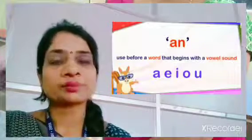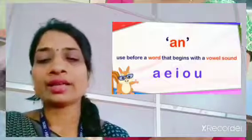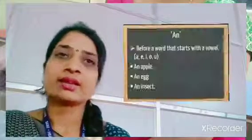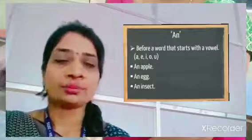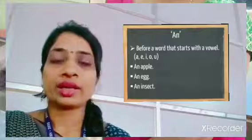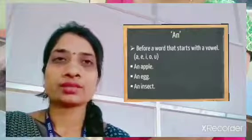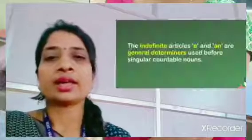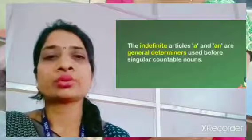'An' is used with a vowel sound — a, e, i, o, u. With alphabets that start with a vowel sound, we use 'an'. For example: an apple, an egg, an insect. The beginning sound of apple, egg, and insect is a vowel sound, so we use 'an' here.